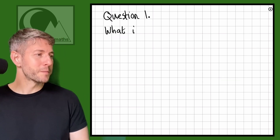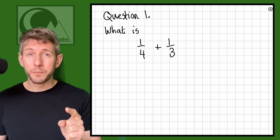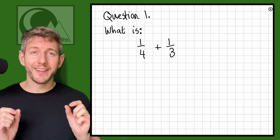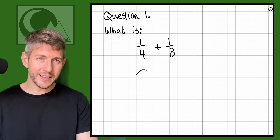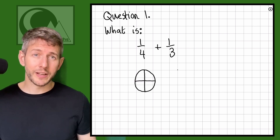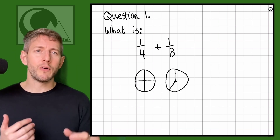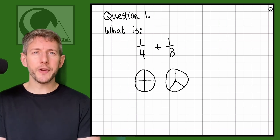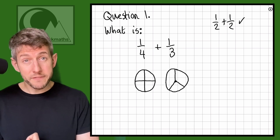Let's consider the question: what is one quarter add one third? The first thing to know is that one quarter and one third are different types of fraction. If you think about biscuits, a quarter is when we divide into four and a third is when we divide into three. You cannot write a number as a collection of quarters and thirds together — it won't work.